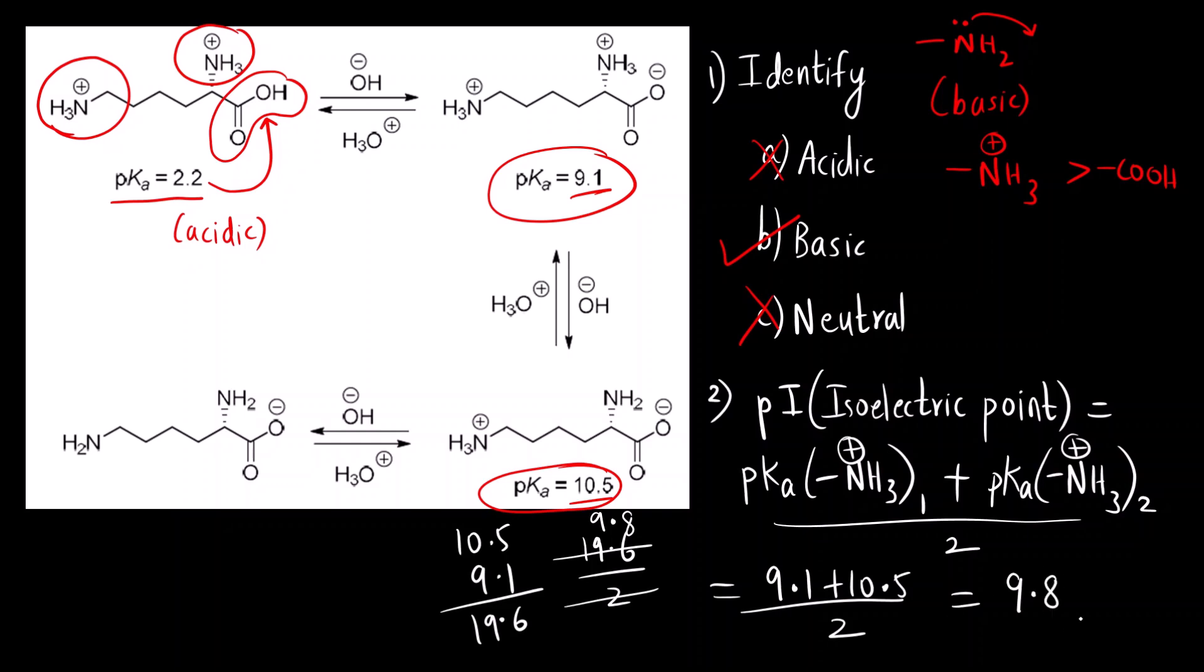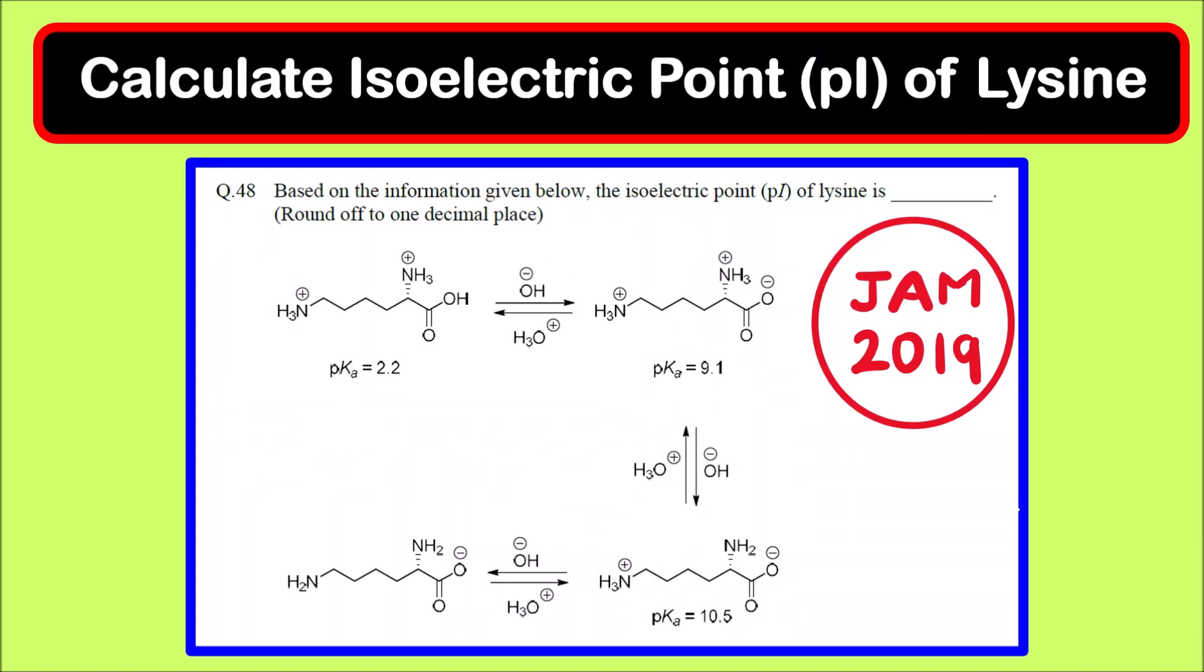Nine point eight is the correct answer. You have to be very careful about the decimal place. You have to round off to only one decimal place. Decimal place means the place after this point. The correct answer is nine point eight. I hope you have understood the solution. Thank you.